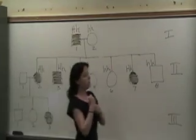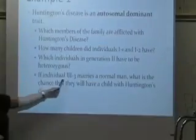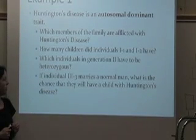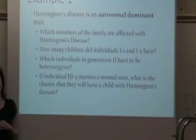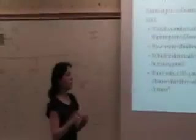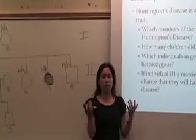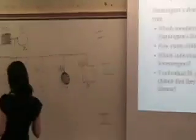The last question is asking us, if individual 3 in generation 3 marries a normal man, what is the chance they will have a child with Huntington's disease? So we know if the man is normal, he has to be homozygous recessive. Even if he has one big H, he's going to have Huntington's disease.